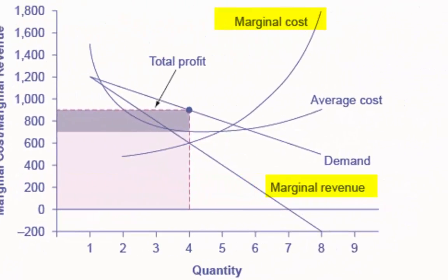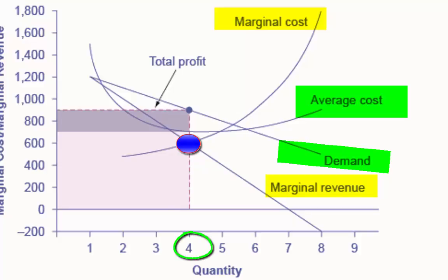This figure begins with the same marginal revenue and marginal cost curves from the previous slide. It then adds an average cost curve and the demand curve faced by the monopolist. The firm first chooses the quantity where marginal revenue equals marginal cost. In this example, the quantity is 4. The monopolist then decides what price to charge by looking at the demand curve it faces.